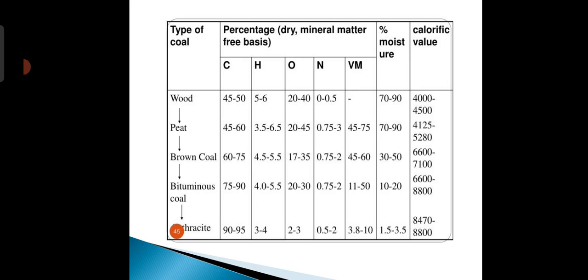For lignite, or brown coal: the percentage of carbon is 60–75%, hydrogen 4.5–5.5%, oxygen 20–35%, nitrogen 0.75–2%, volatile matter 45–60%, moisture 30–50%, and the calorific value is 6,600–7,100.